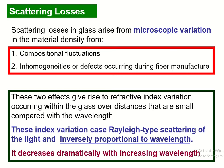Today's class we are going to see about scattering losses. Scattering losses in glass arise from microscopic variations in material density, from composition fluctuations, and from inhomogeneities or defects occurring during fiber manufacturing. These two major factors cause scattering loss in glass optical fiber, giving rise to refractive index variations occurring within the glass over distances small compared with the wavelength.